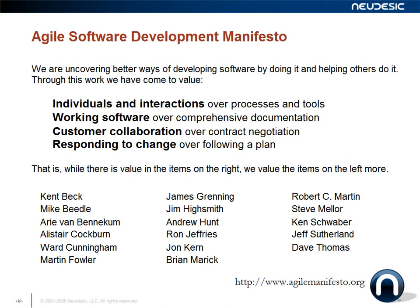In the mid to late 80s, a number of people started looking at more lightweight methods of producing software. In 2001, a group of them got together in Snowbird, Utah, talked about what those common practices were among agile software, and developed the Agile Software Development Manifesto.